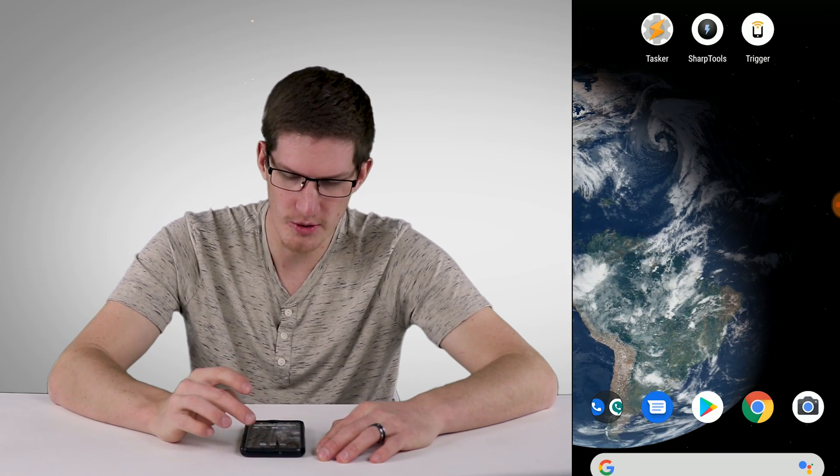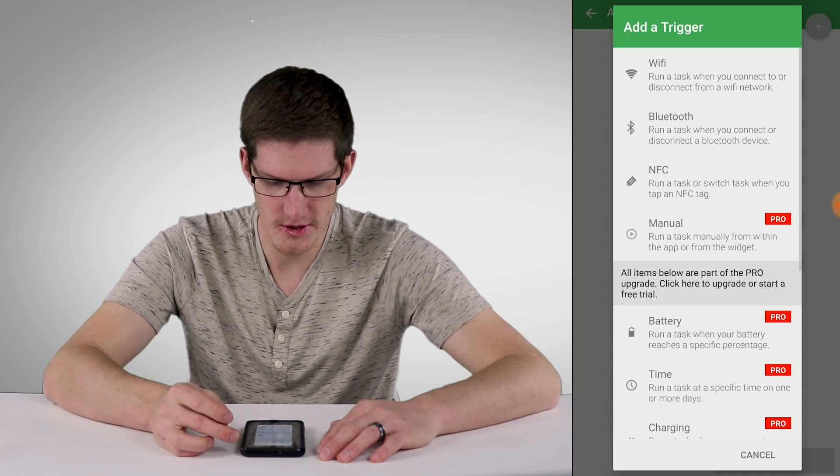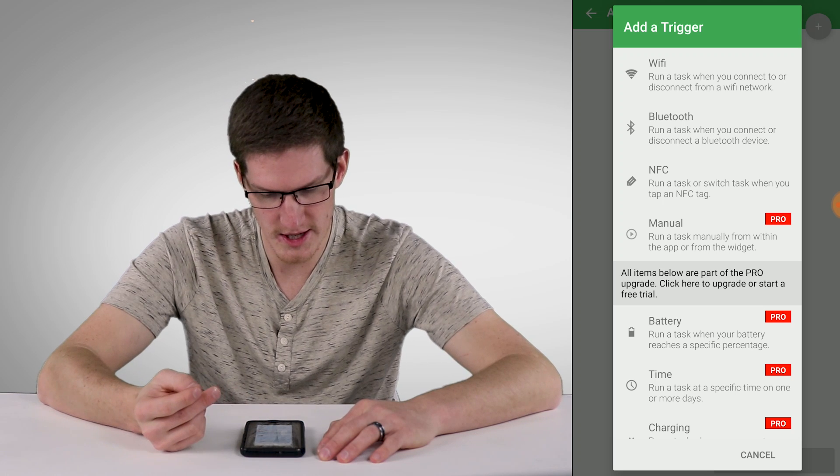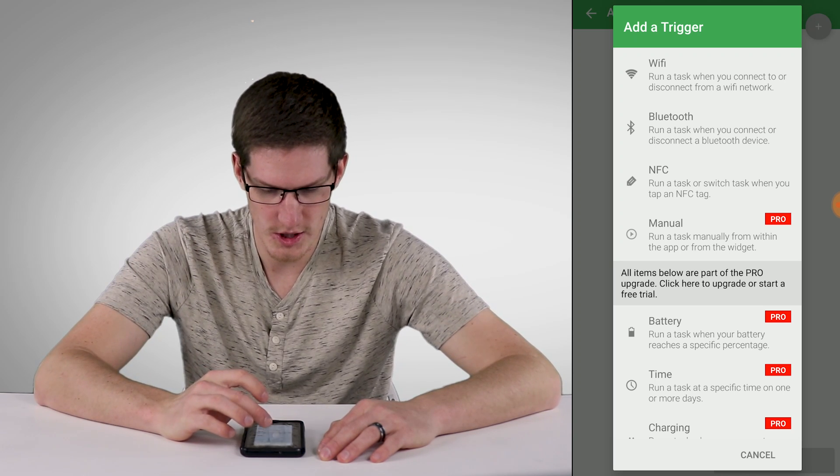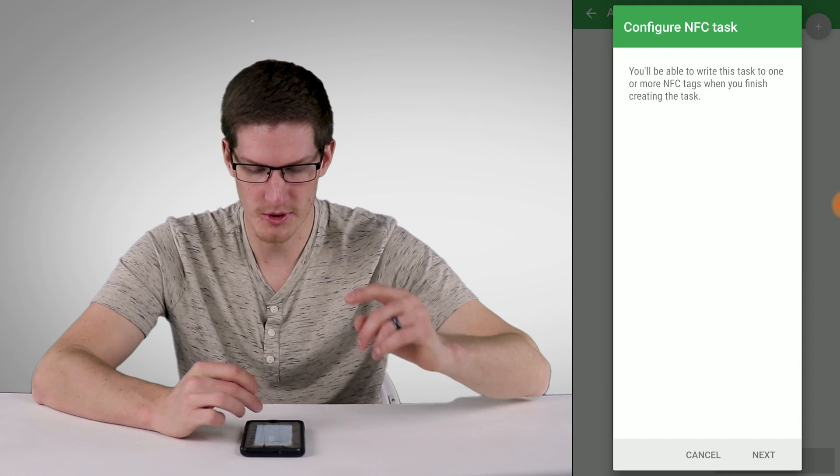And now what we're going to need to do is go into Trigger. We'll create a new task here. And we want to select the third one. Run a task or switch task when you tap an NFC tag. So then we'll click Next.